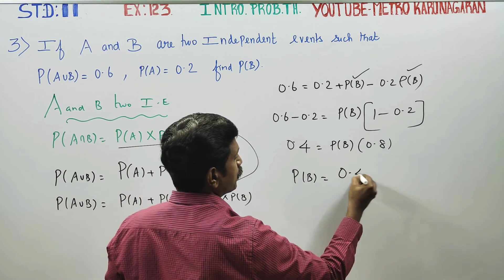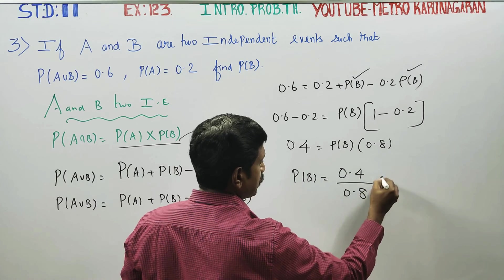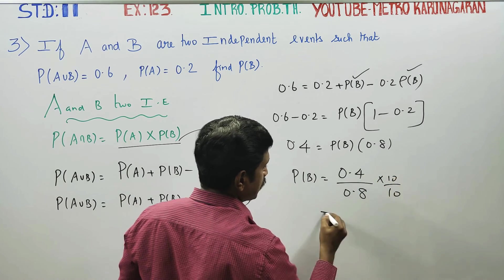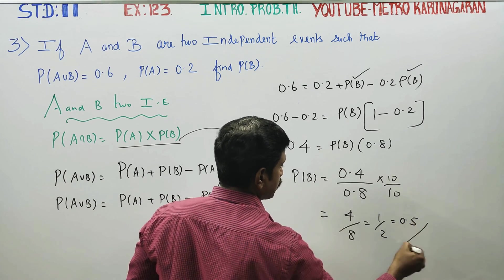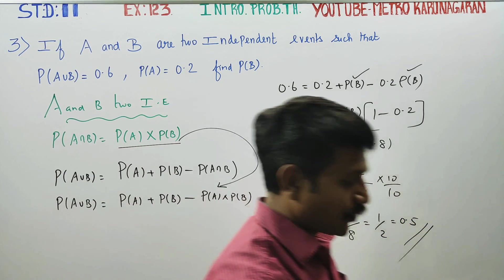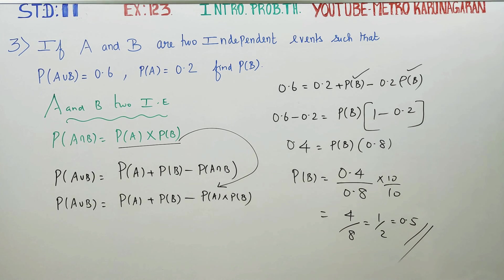So 0.4 divided by 0.8 - canceling the decimal points, four by eight cancels to one by two, which is 0.5. This is your final answer, the probability of B. Thank you.